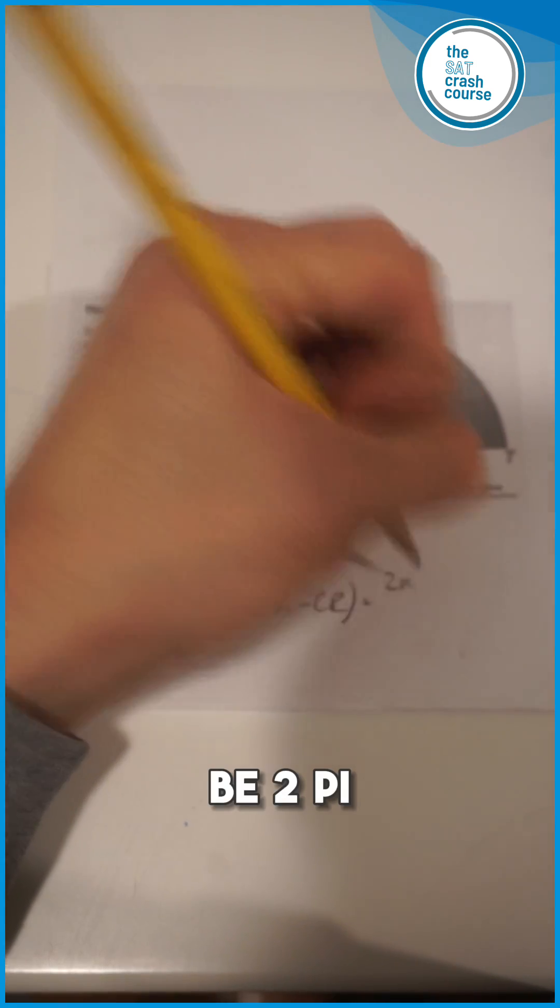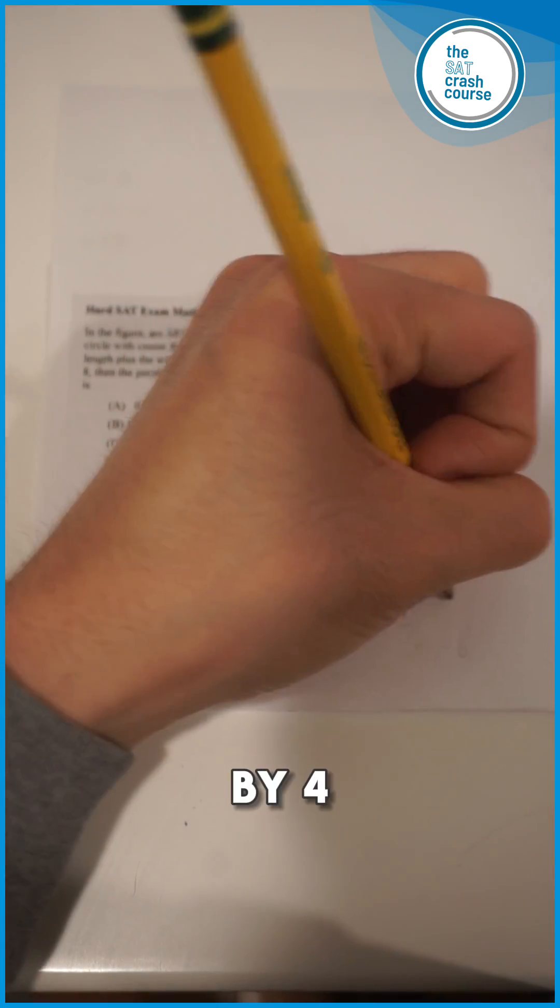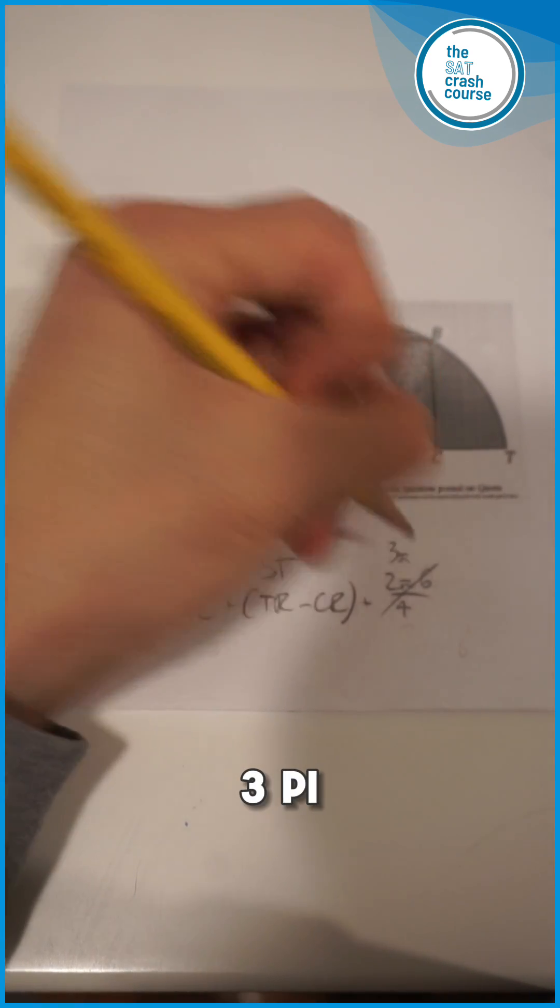So that's going to be 2π times 6 divided by 4, which just becomes 3π. So we'll write that in.